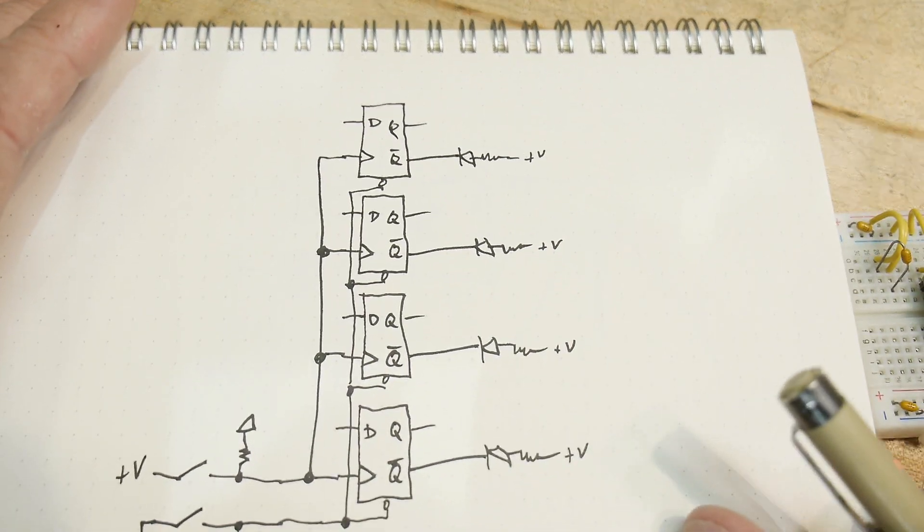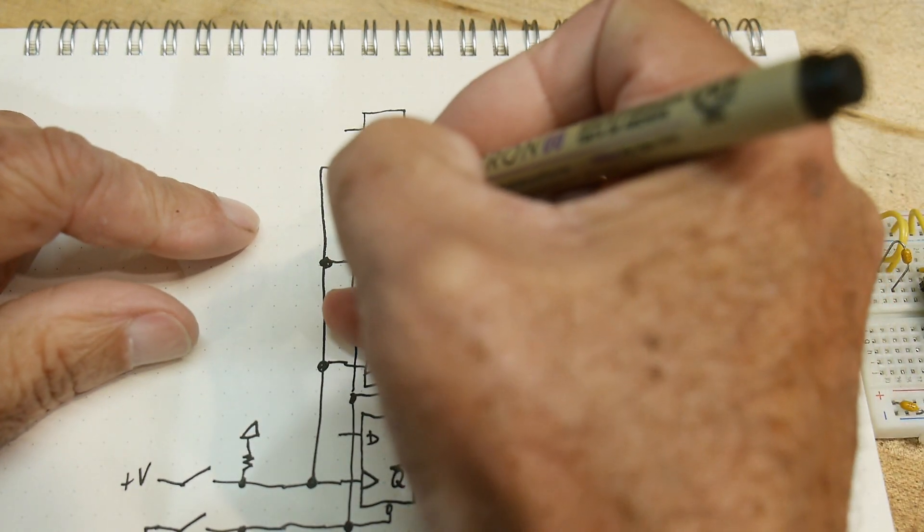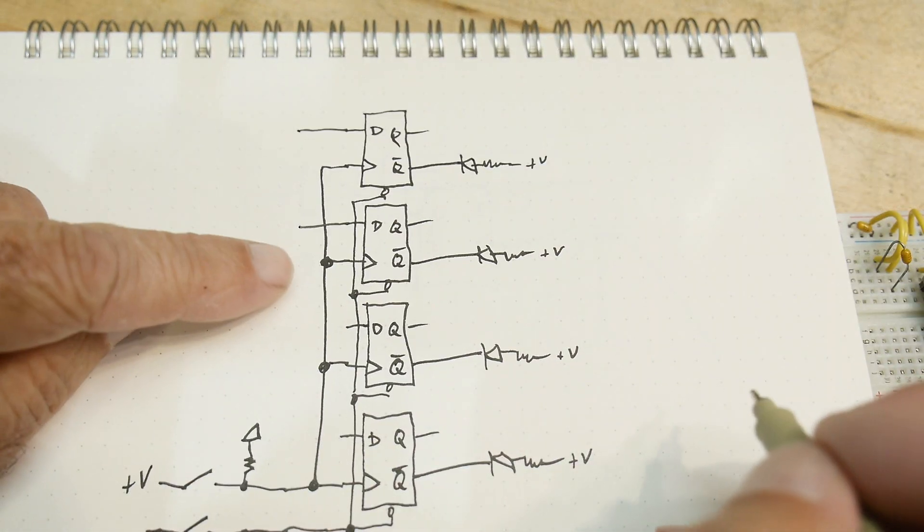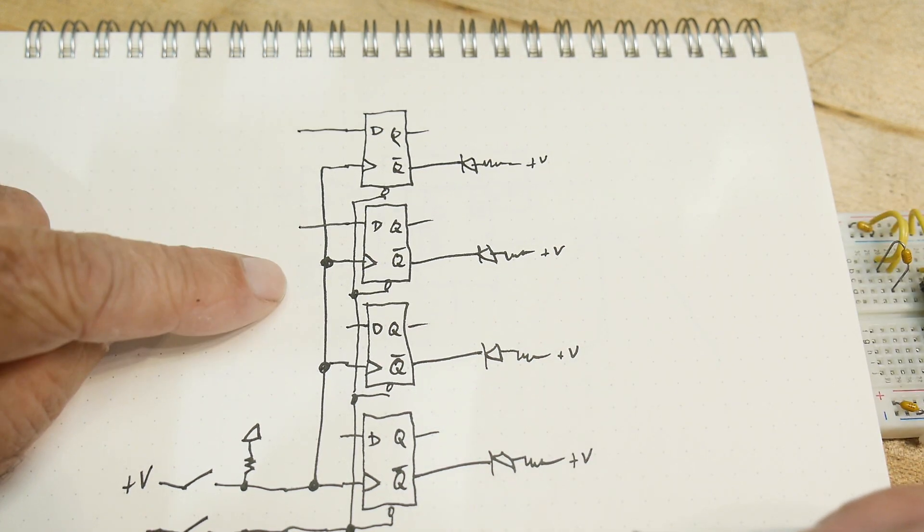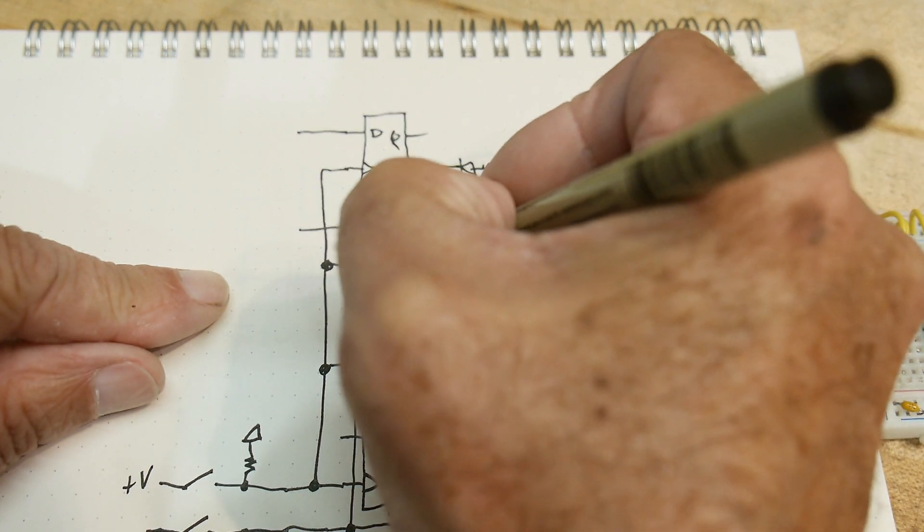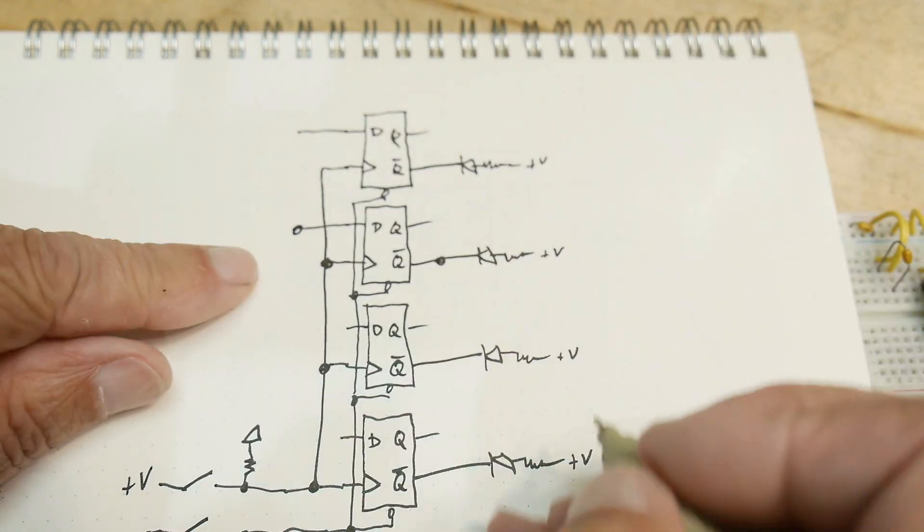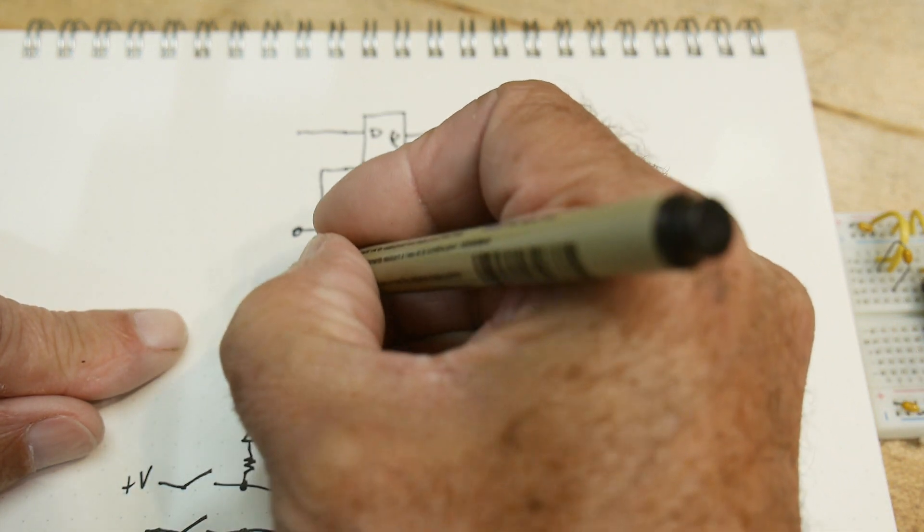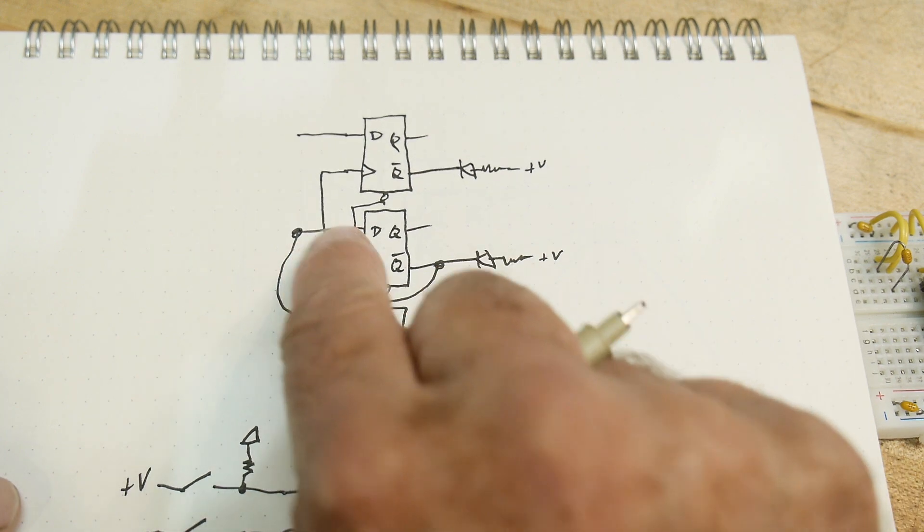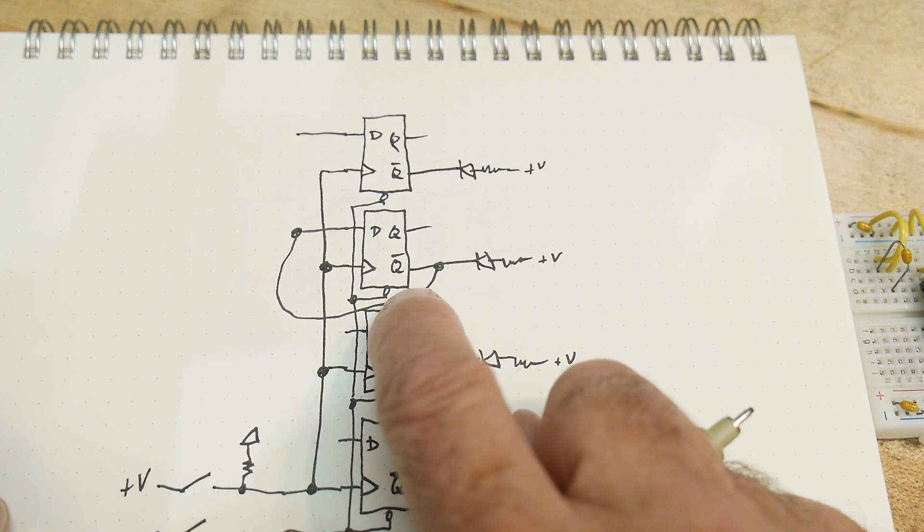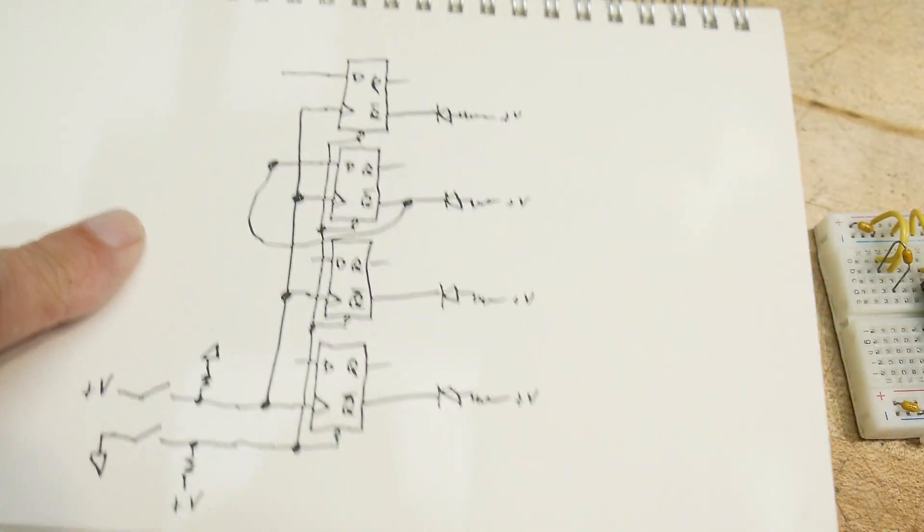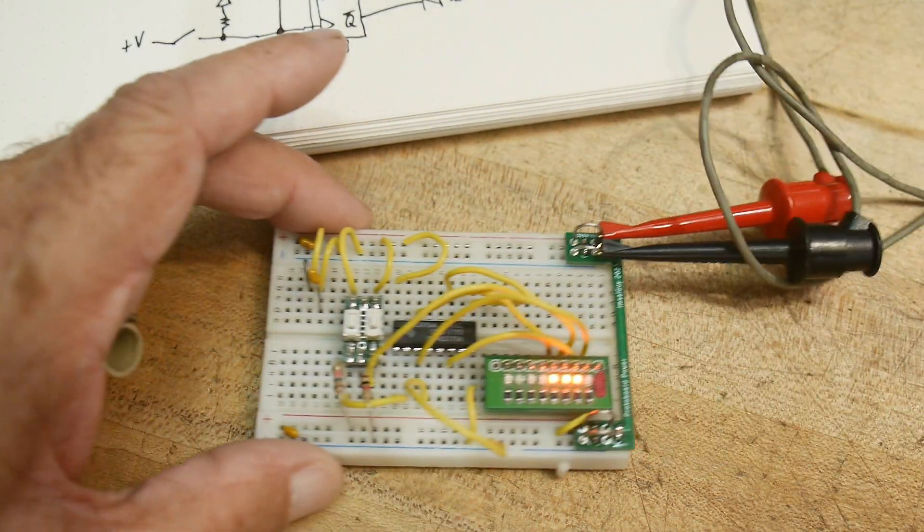All right. Let's go ahead and use the idea that a D flip-flop can be a toggle flip-flop. If you tie not Q and D together. Okay. So, we're going to add a wire here where we're going to short out Q and not Q. So, that means that D will always be the opposite of Q. So, when we clock it, it should toggle. So, let's do that.